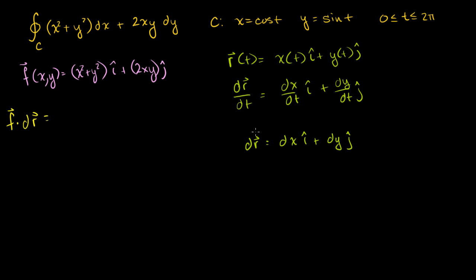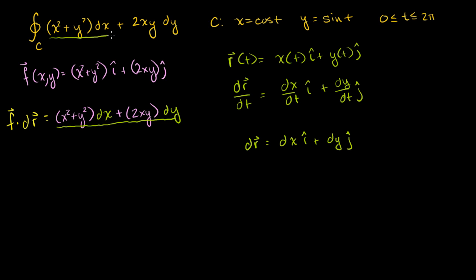What is F dot dr going to be? For dot products, you multiply the corresponding components and add them up. So taking F dotted with dr, you get the i component: (x squared plus y squared) times dx, plus the j component: 2xy times dy. Notice that this is identical to our original line integral. So our line integral is the same exact thing as the line integral over closed curve C of F dot dr.